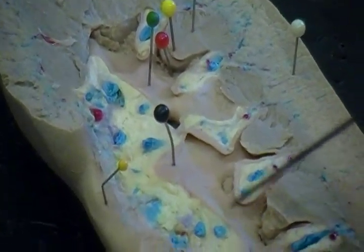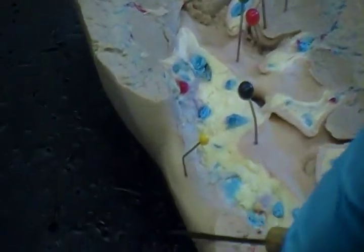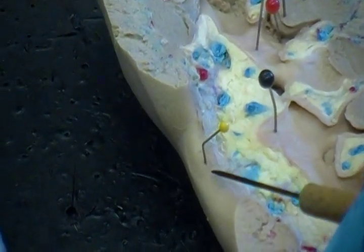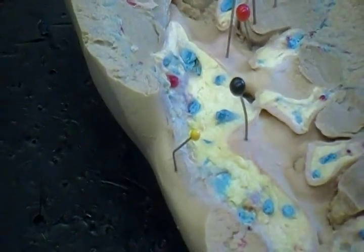The renal pelvis will then empty the urine into the ureter, and the ureter will leave the kidney through this indented area called the renal hilum. So, this small yellow pin is pinning the indented area called the renal hilum. Okay?